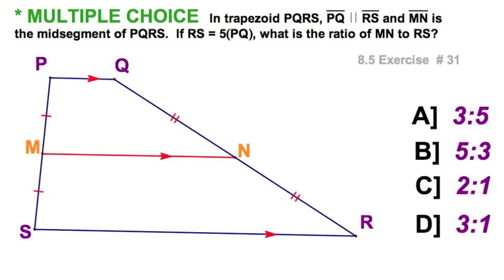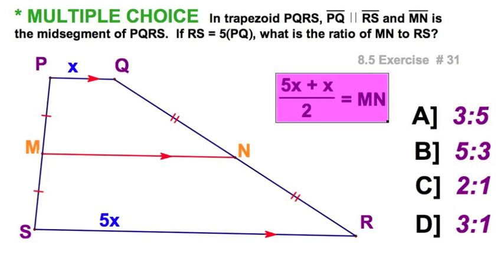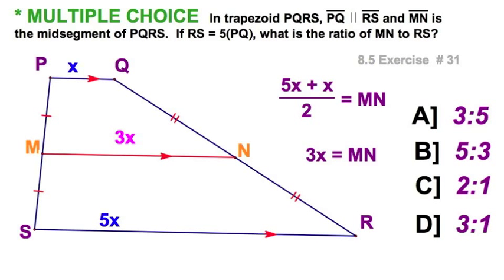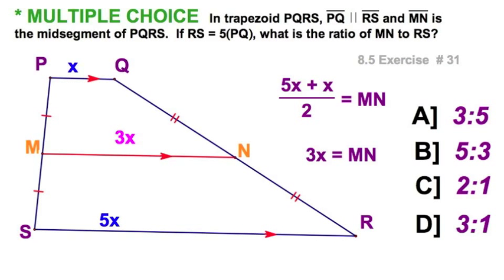Draw yourself a diagram. RS is 5 times PQ, so I'm going to assign PQ equal to x. Then RS equals 5x. So I've got x and 5x for my bases. What's in the middle of 1x and 5x? That would be 3x. I'm looking for the ratio of MN to RS — that's 3x to 5x — 3 to 5.